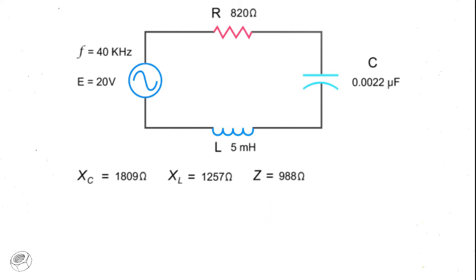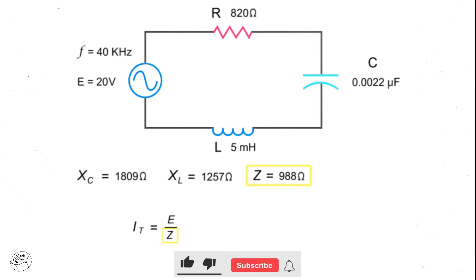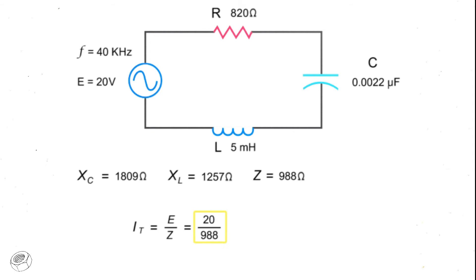To derive the total current of the circuit, divide the source voltage by the impedance. Thus, 20 volts divided by 988 ohms equals 0.0202 amps or 20.2 milliamps.